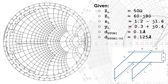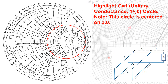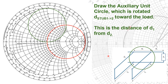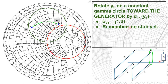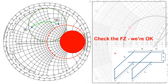Here are our values for the second example. We're going to highlight our unity circle again and create the auxiliary circle moving at this distance d2. Let's plot our admittance and note that the actual load admittance hasn't been moved the distance of d1 yet — it's still right here at this point. Rotate it, moving this distance of d1 toward the generator, noting that our susceptance is a positive 1.31. Remember, the stub hasn't been added yet. Quick check on the forbidden zone — we're doing okay.